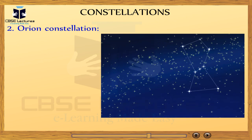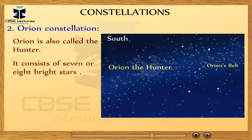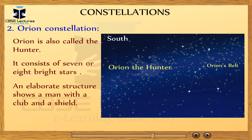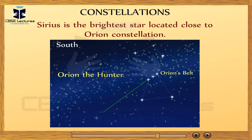The second is the Orion constellation, also called the Hunter. The three prominent stars in this constellation mark the belt of the hunter. It consists of seven or eight bright stars, and an elaborate structure shows a man with a club and a shield. This constellation is visible in the southern sky and can be easily seen during the winter season in the late evening. Sirius is the brightest star, located close to the Orion constellation.